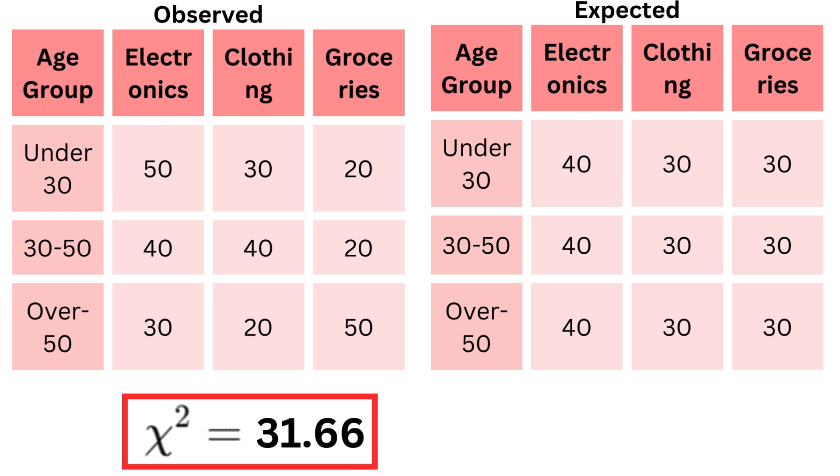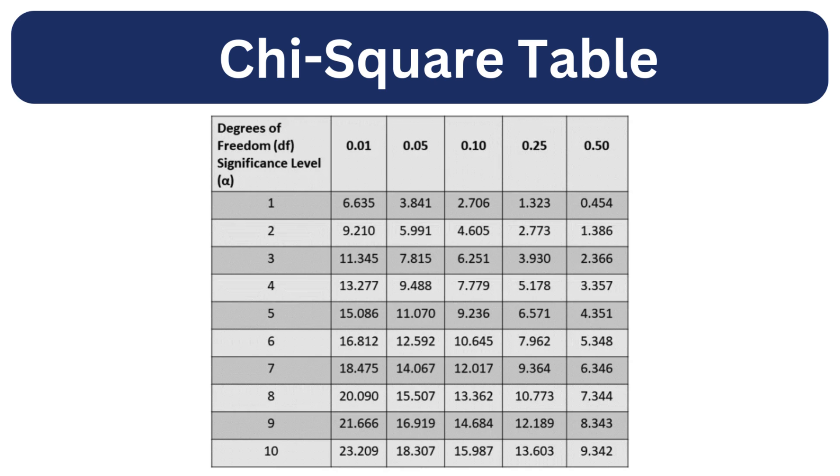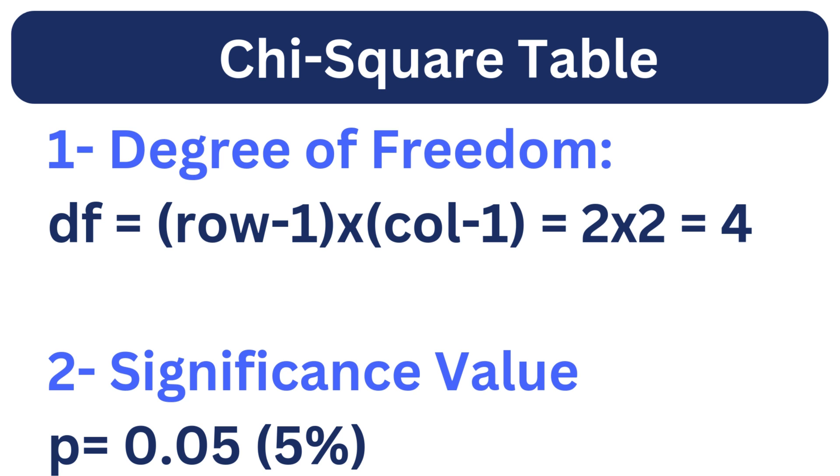Now it's time to compare our calculated chi-square value with the critical value from the chi-square distribution table. For this, we require two things: the degree of freedom and the significance level.